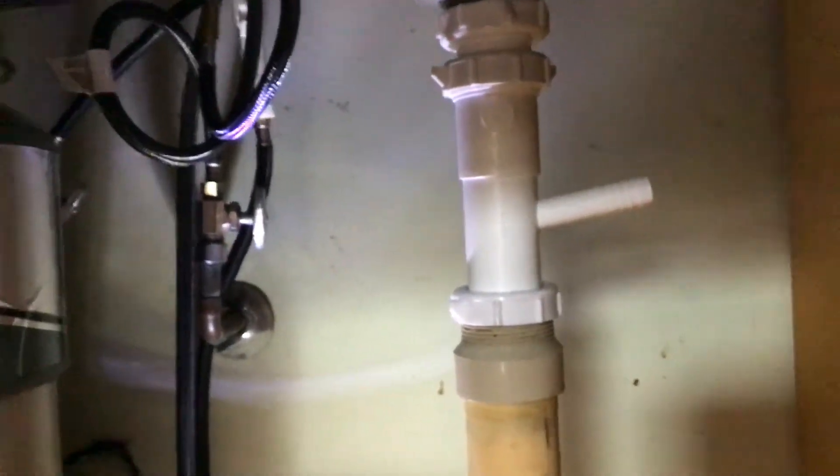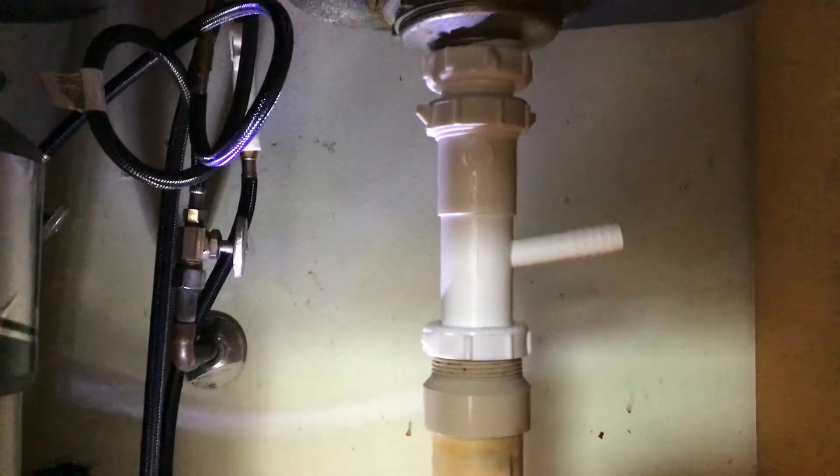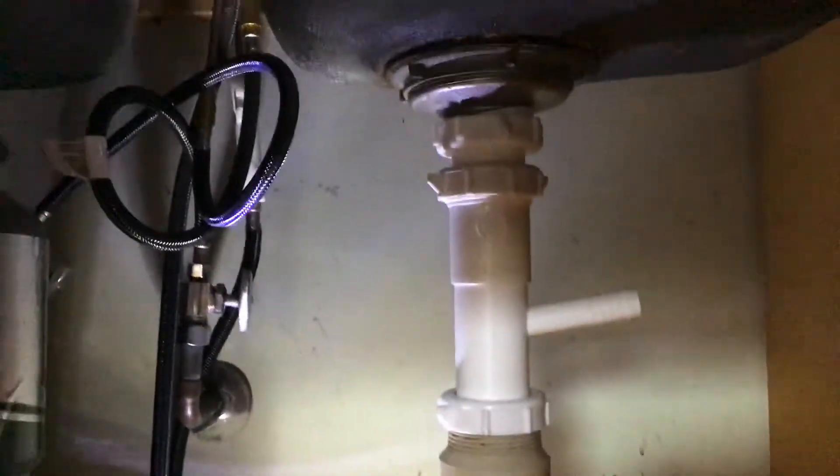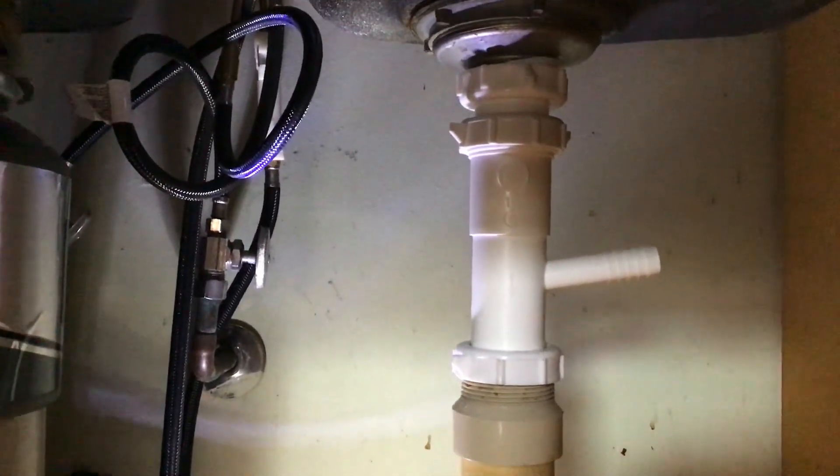And then what you would do is you put the Y in here and then you have to get a tail piece to fit in the top in there. So that's the fitting you would use to add in a dishwasher to your existing drain plumbing.